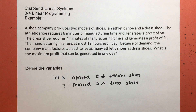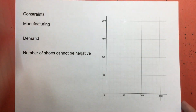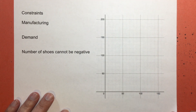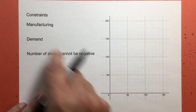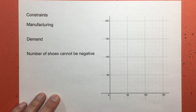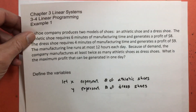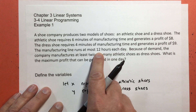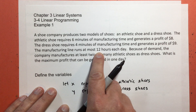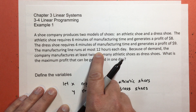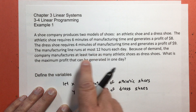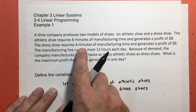Now that I've defined the variables, I can set up my constraints. There's a manufacturing constraint — there's only so much time during the day that the company can manufacture shoes. The time it takes to manufacture all the shoes cannot be more than 12 hours. Each athletic shoe takes six minutes and each dress shoe takes four minutes.